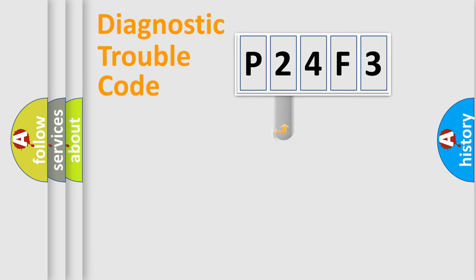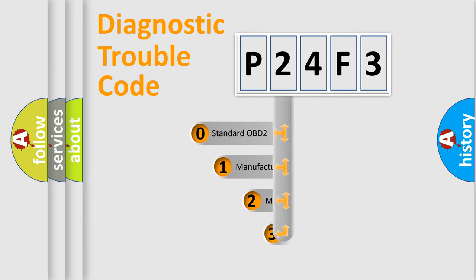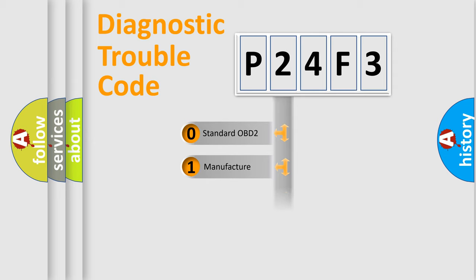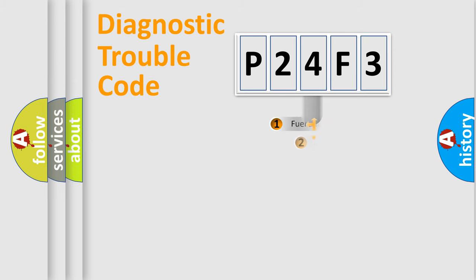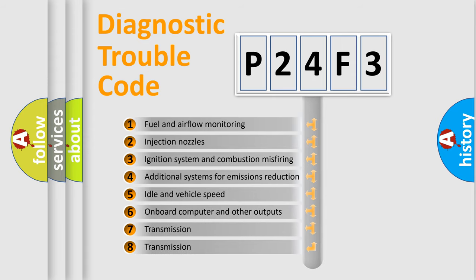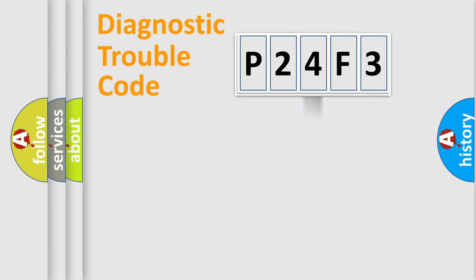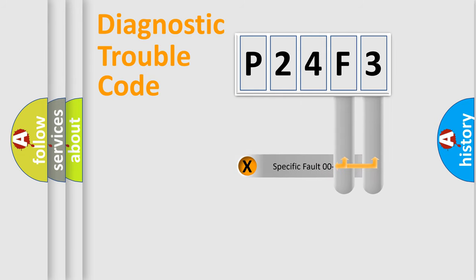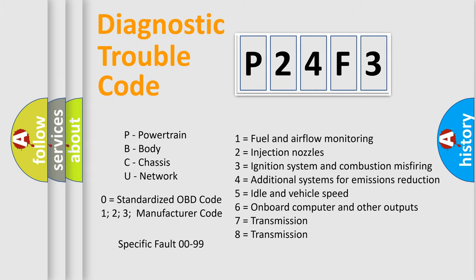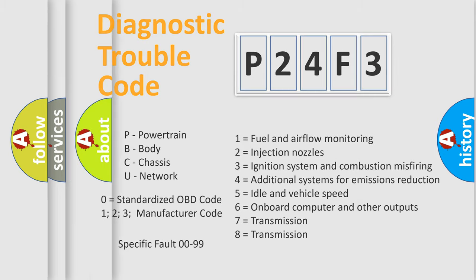This distribution is defined in the first character of the code. If the second character is expressed as zero, it is a standardized error. In the case of numbers 1, 2, or 3, it is a more specific expression of a car-specific error. The third character specifies a subset of errors. This distribution is valid only for the standardized DTC code, and only the last two characters define the specific fault of the group. Such a division is valid only if the second character code is expressed by the number zero.